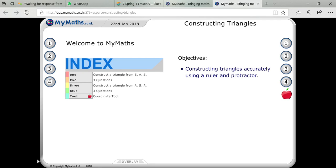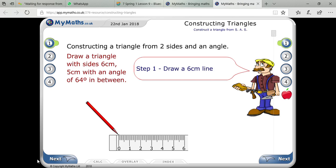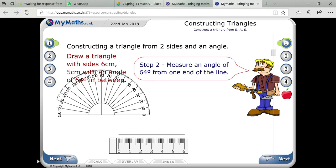Here I am going to explain how to construct a triangle from side-angle-side with the help of a ruler and compass. Let's see the first question: draw a triangle with sides 6 centimeters and 5 centimeters with an angle of 64 degrees. First of all, draw a 6 centimeter line like this.